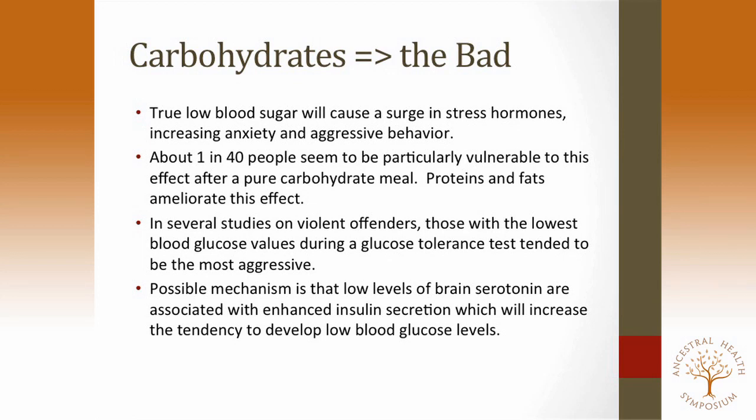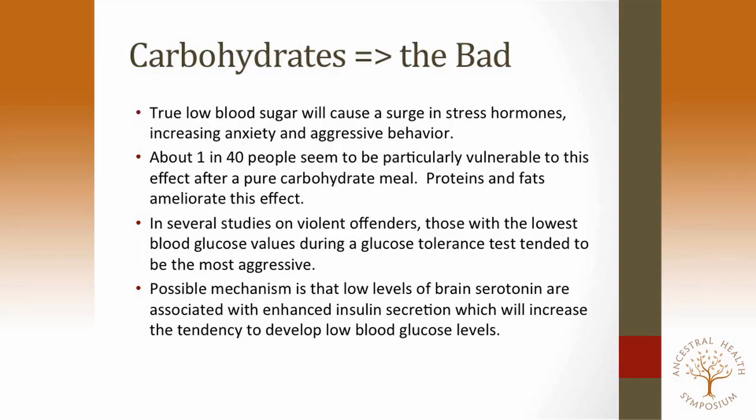There's quite a bit of literature linking the violence angle — I was surprised by how much there was, and I wonder how many lawyers will start doing oral glucose tolerance tests on their clients. Low blood sugar causes a surge in stress hormones, making you stronger and faster but anxious and aggressive. About one in 40 people will truly drop to the 40s after a pure carbohydrate meal. Proteins and fats ameliorate this effect. In several studies on violent offenders, those with the lowest blood glucose values during a glucose tolerance test tended to be the most aggressive and the biggest drinkers.